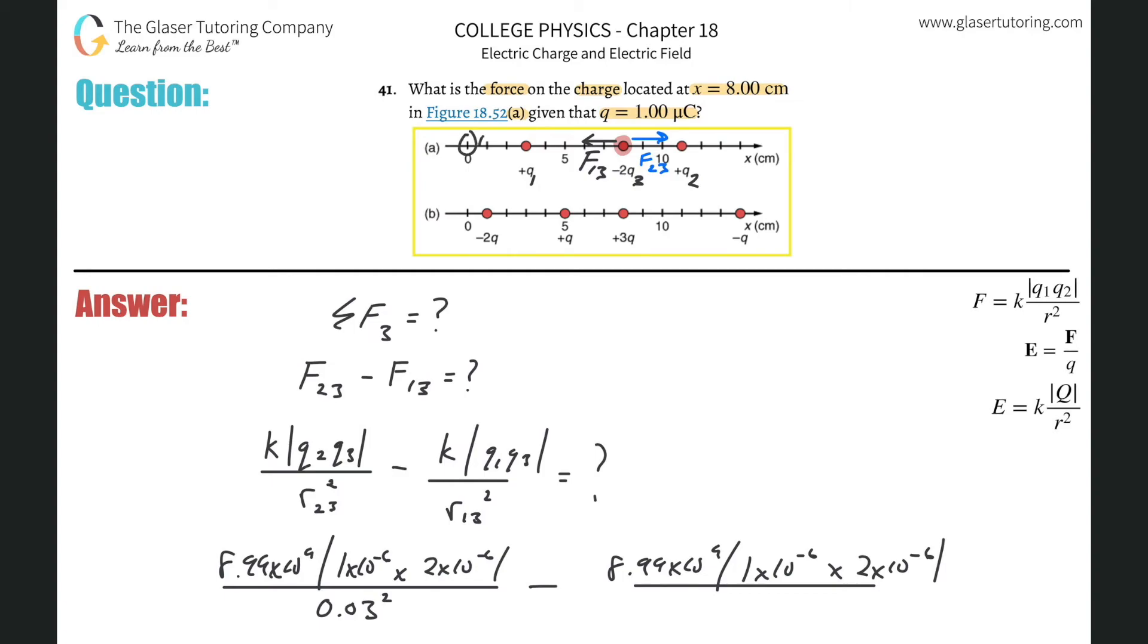So this looks like it's at 0, 1, 2, 3, right? And this is at 3, and this is at 8, so the difference between them is going to be, it looks like 5, right? So it's going to be 5 centimeters, but you need that in meters, so move the decimal two places to the left, so it's 0.05 squared.